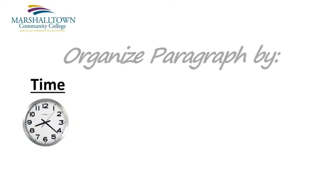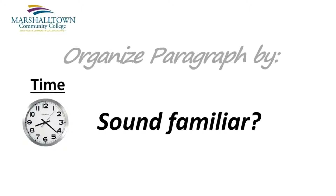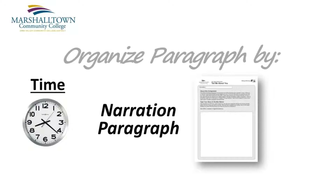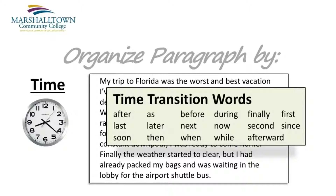When we organize by time, we're talking about a paragraph that explains a sequence of events, or in other words, a paragraph that tells a story. This should sound familiar to you, since this is exactly what you did when you wrote your narration paragraph earlier in this course. And if you recall, the assignment asked you to use certain transition words in sentences, like after, before, during, finally. Organizing your paragraph by time is the perfect choice when writing about anything that includes a sequence of events.